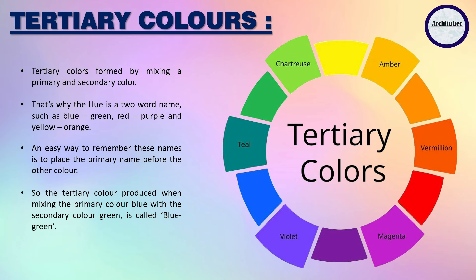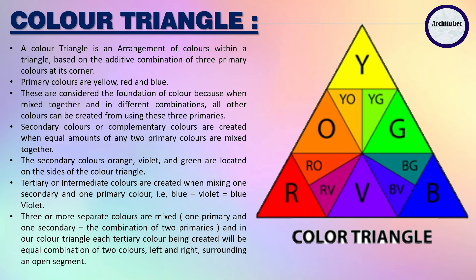Now let us discuss about the color triangle. At the corners of the triangle we have primary colors, and on the sides we have secondary colors. If you combine each of the colors, you get the tertiary color — like red and violet gives red-violet, or red and orange gives red-orange. The tertiary color is created in equal combination of two colors on the left and right surrounding an open segment.